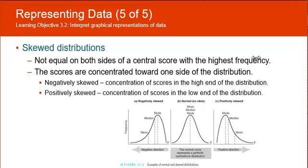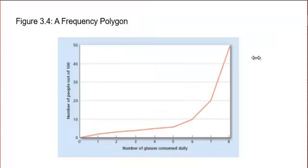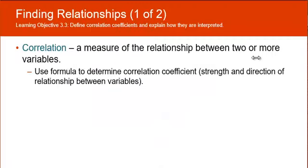Finding relationships, your learning objective 3.3. We've already kind of talked about correlation, but it's the measure of two or more variables in a data set. We use a formula to determine what the correlational coefficient is, and that measures the strength and the direction of the relationship between the two variables. A positive correlational coefficient is when the variables move in the same direction. So as one increases the other increases; as one decreases the other decreases. It's a positive relationship. The more miles per day you run, the healthier you are. Those two things are related. Negative correlational coefficient is a negative relationship. So as one increases, the other decreases. The more cigarettes you smoke per day, the less healthy you are. That would be a negative correlational coefficient.